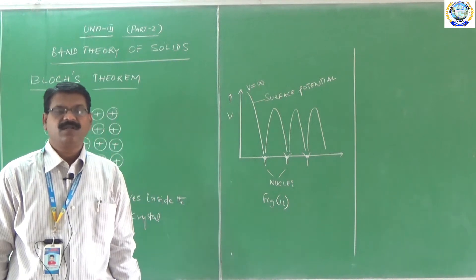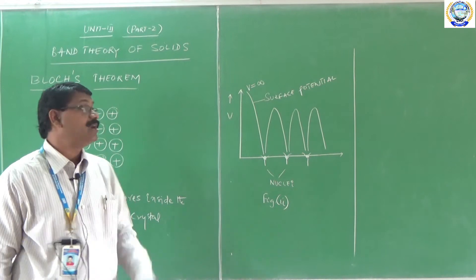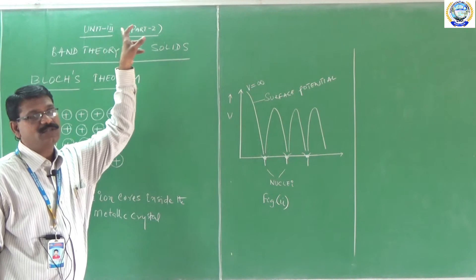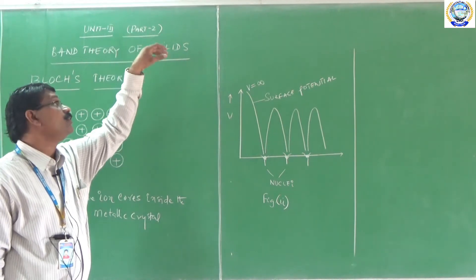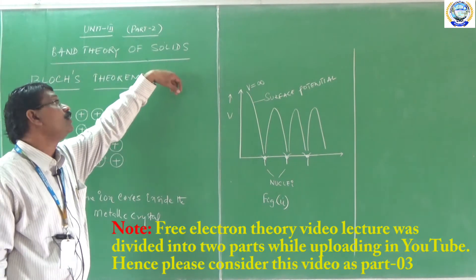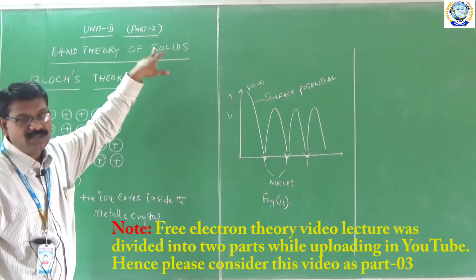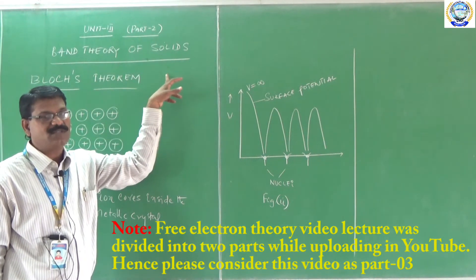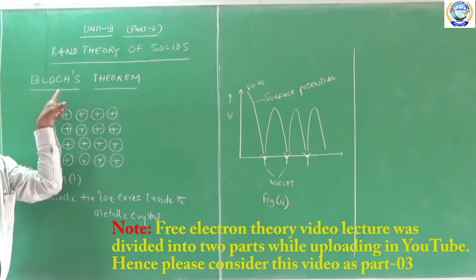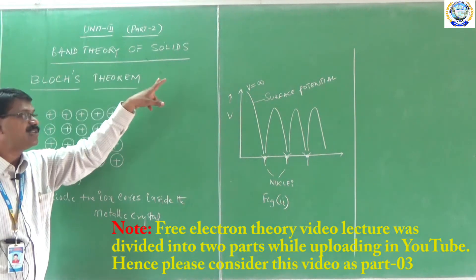Good morning students. This is Professor Sandra, presenting a class on Unit 3, Part 2, called Band Theory of Solids. Previously we discussed Part 1 of Unit 3, called Free Electron Theory of Metals. In this video lecture, I would like to present two major concepts: the first is the important theorem called Bloch's theorem, and the second is the effective mass of an electron.